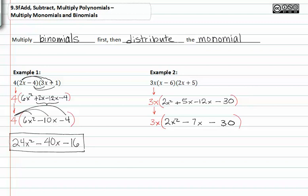I can now go through and distribute the 3x to each term inside parenthesis. Doing this I get 6x to the third minus 21x squared minus 90x.